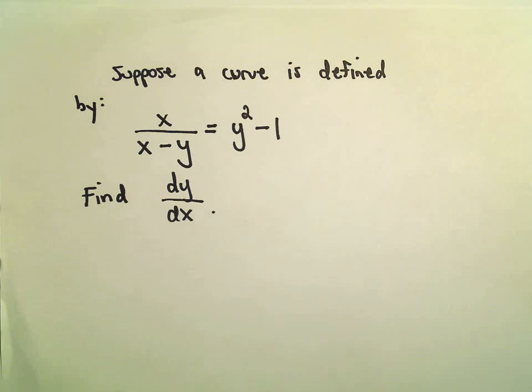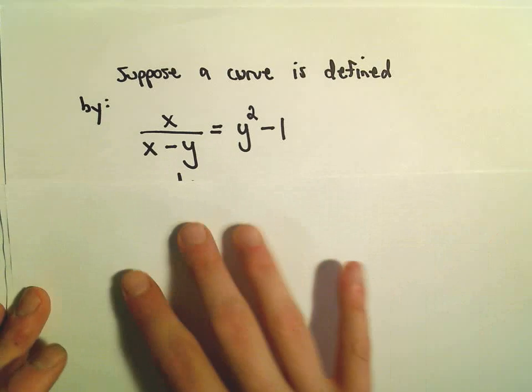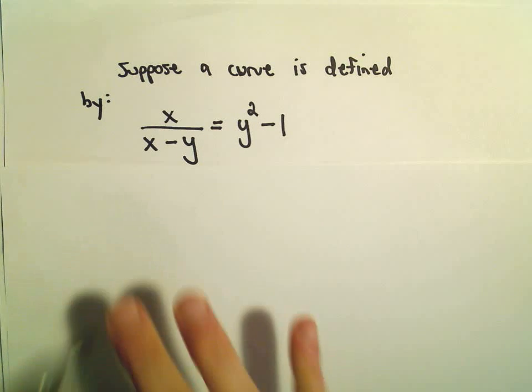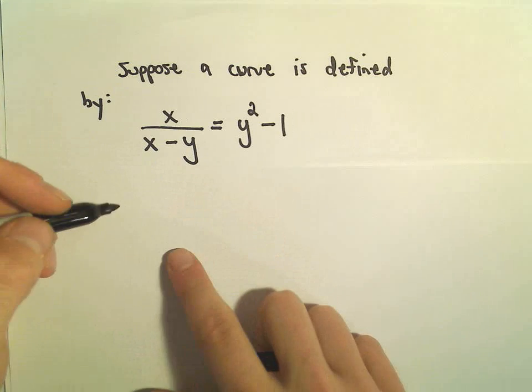So this one, same idea as before, it's just going to be a little more tedious, I think really because of this fraction more than anything. We're going to have to take the derivative with respect to x of both sides. Well, on the left side, we'll have to use the quotient rule.